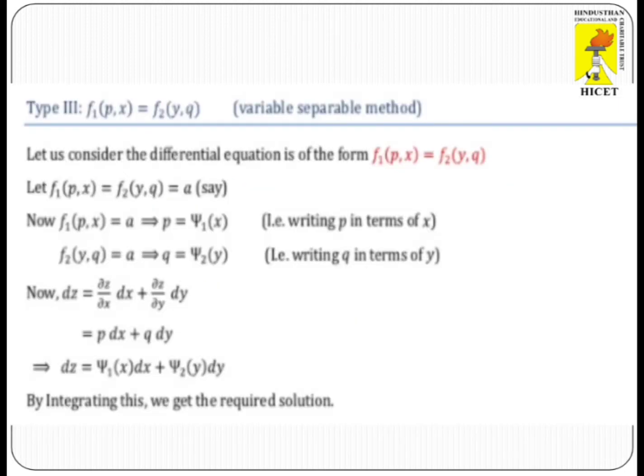Now, Type 3. The third type is the equation of the form F(P,Q,X,Y). When given in this form, first of all we separate the variables. This method is also called the variable separable method.